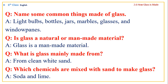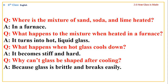What is glass mainly made from? From clean white sand. Which chemicals are mixed with sand to make glass? Soda and lime. Where is the mixture of sand, soda, and lime heated? In a furnace.